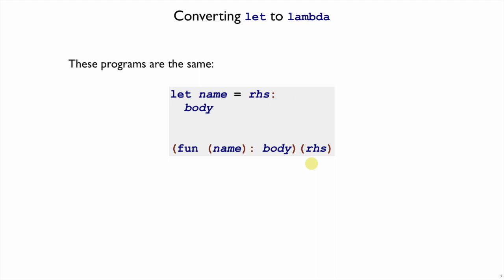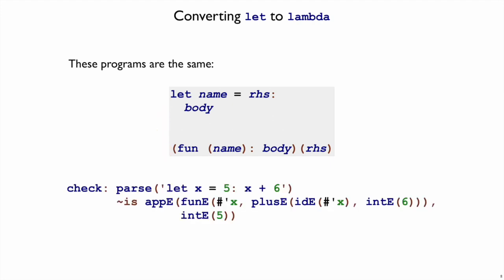The implication of this correspondence is we don't actually need both let and function calls in our interpreter. We could have our parse get rid of let by having it generate the equivalent function and function call form instead.